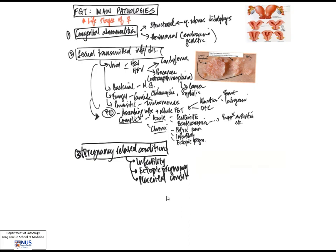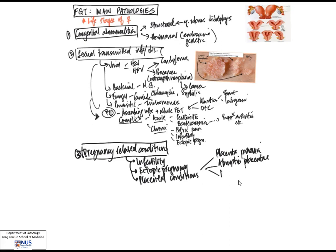In pregnancy, there can also be placental conditions. Some of these are emergencies and will be well covered in your O&G posting. Some examples would be placenta previa, where the placenta is too low-lying; abruptio placentae; as well as placenta accreta, where the placental tissue grows too deeply into the wall of the uterus.